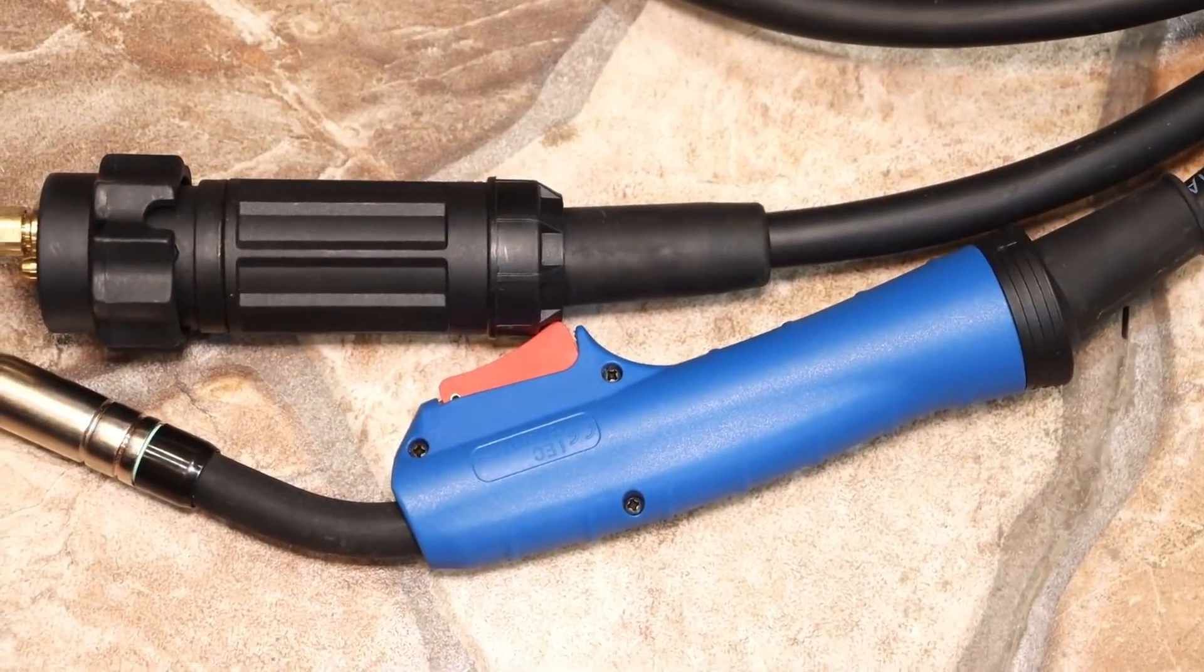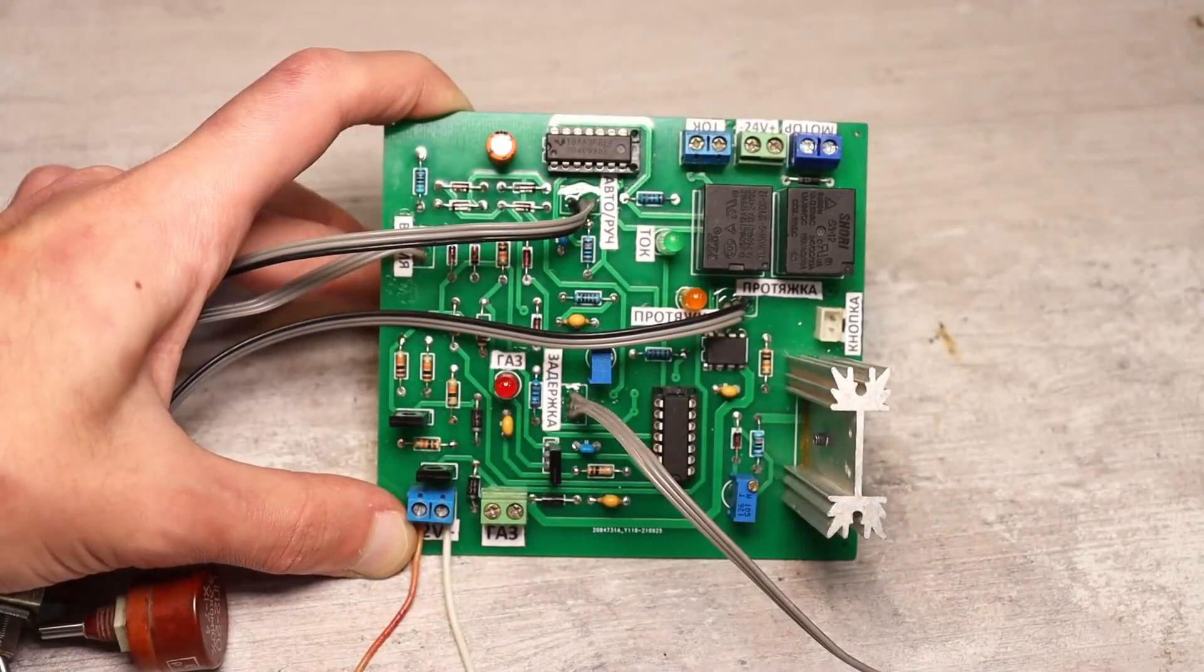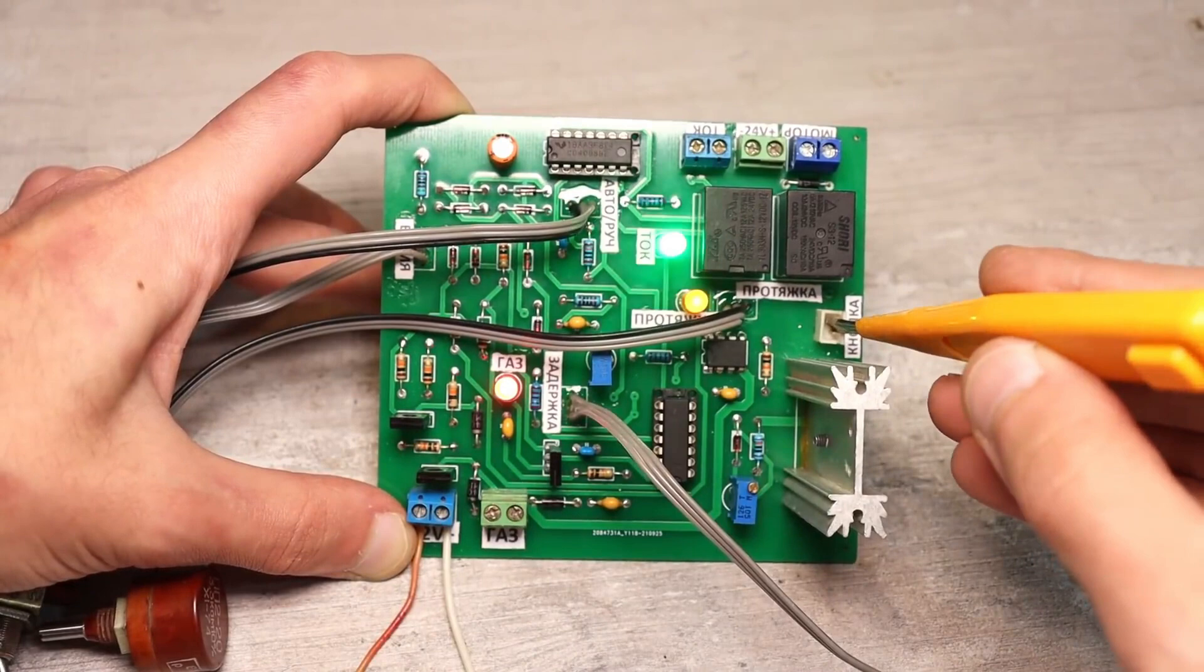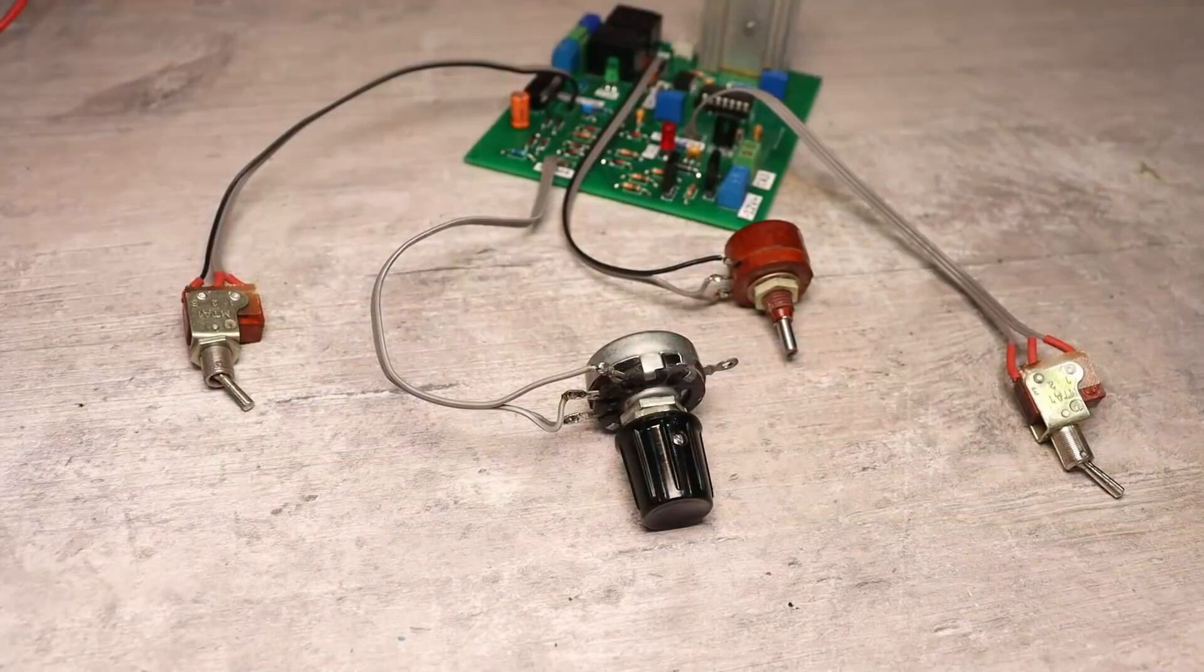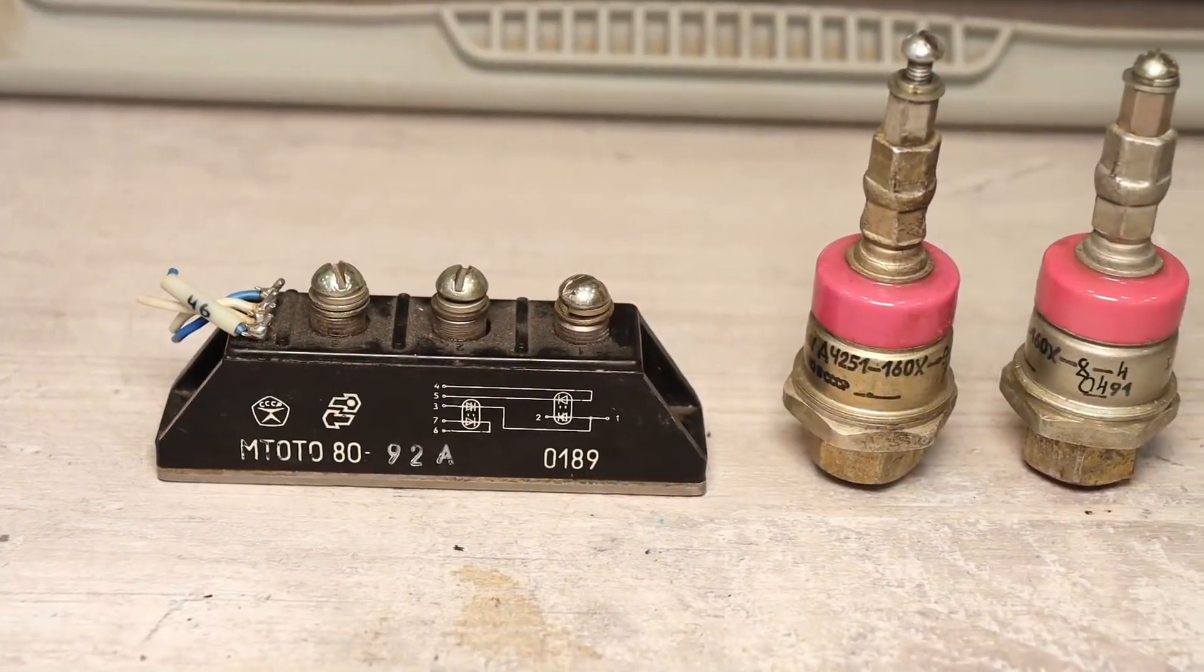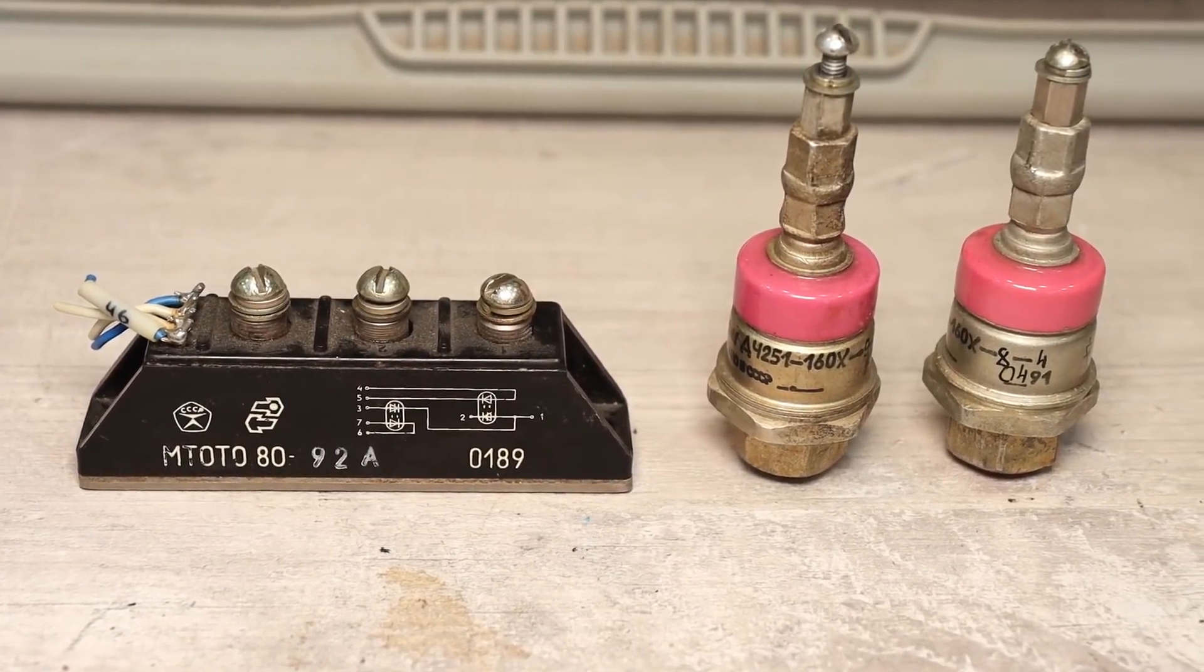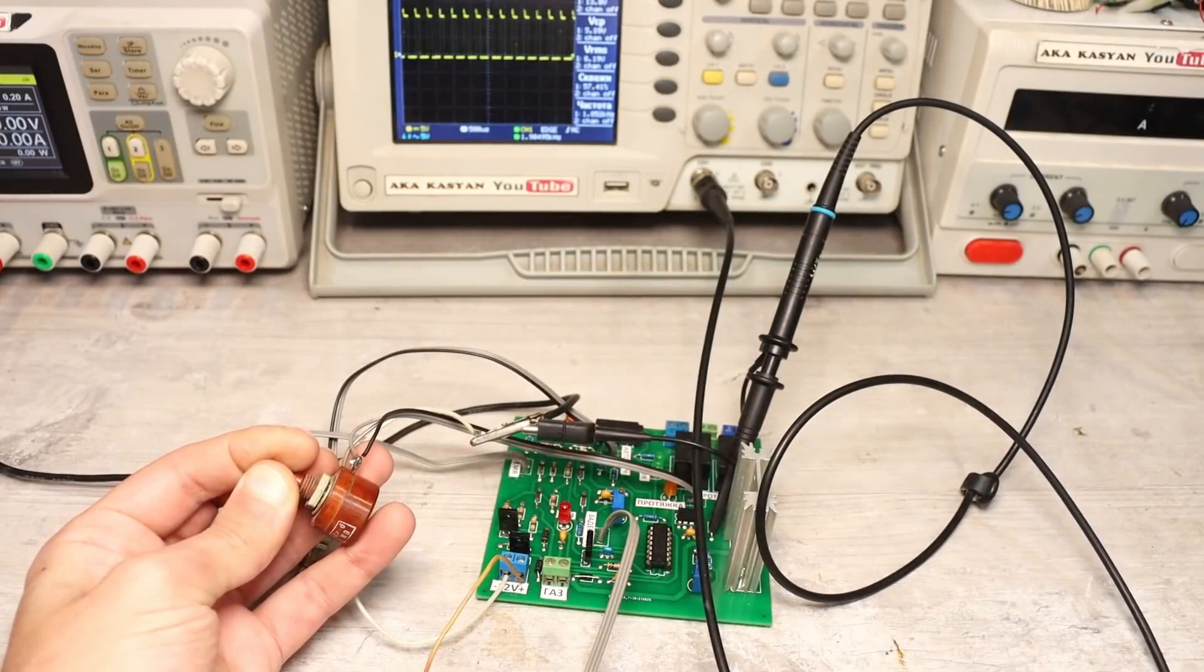This won't be a simple semi-automatic welder, but a quite serious one, with a good control board, the ability to adjust the delay time for the wire feed, gas valve, welding current, as well as automatic and manual operating modes. There will be electronic welding current adjustment, PWM control of the feed motor, and electronic contactless switching. In other words, no magnetic starters, no clicks, just thyristors.